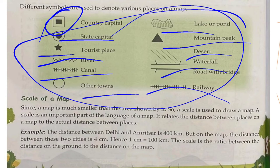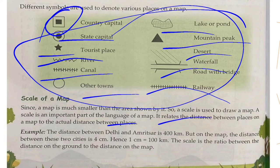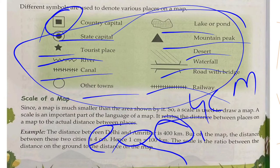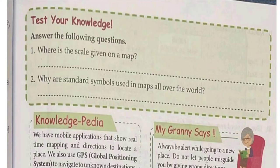Scale of a Map: Since a map is much smaller than the actual area it shows, a scale is used to draw a map. A scale is an important part of the language of a map — it relates the distance between places on a map to the actual distance between places. For example, if Delhi and Amritsar are 400 km apart, the map may show 4 cm, meaning 1 cm equals 100 km, so 4 cm equals 400 km.